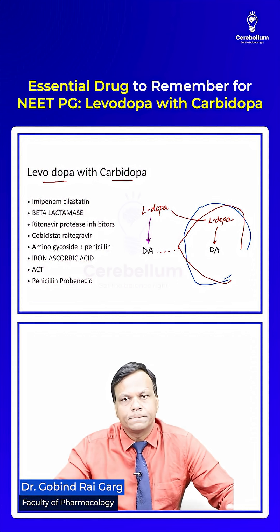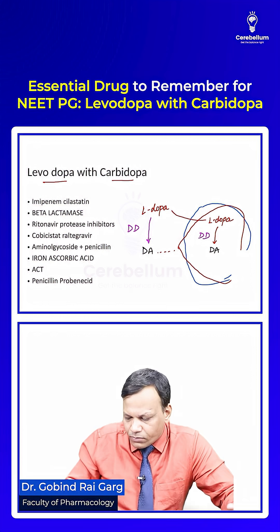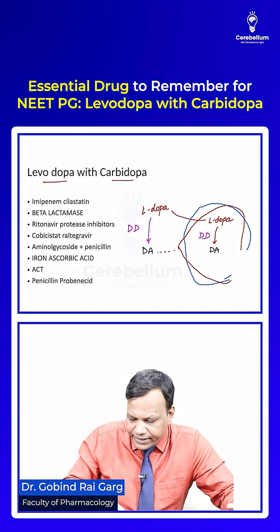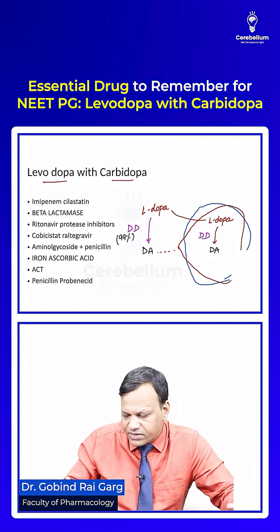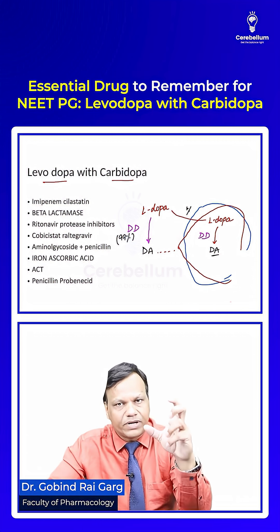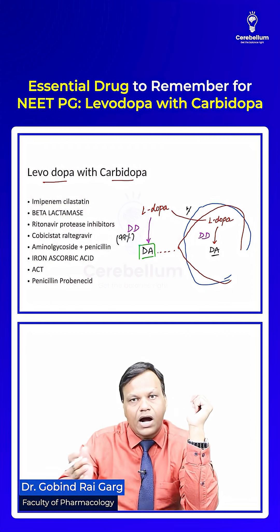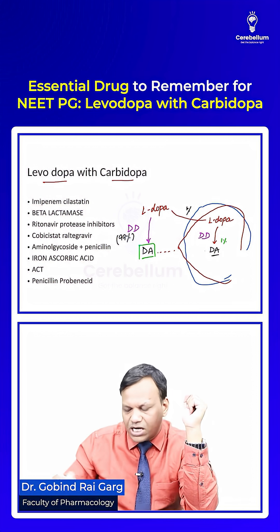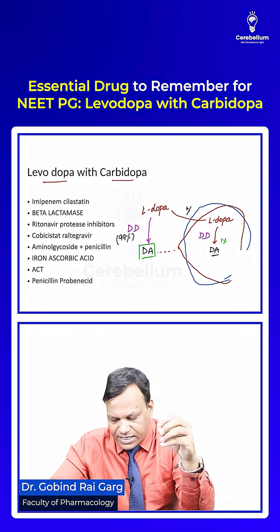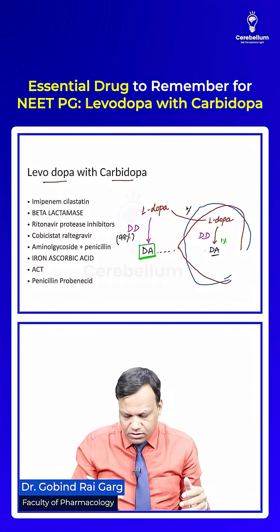However, the same conversion can happen outside the brain as well. The enzyme responsible is dopa decarboxylase. When we give levodopa, around 99% is converted to dopamine outside the brain, and only 1% is able to enter the brain to form dopamine. This means efficacy is very low, since we get only 1% dopamine in the brain.